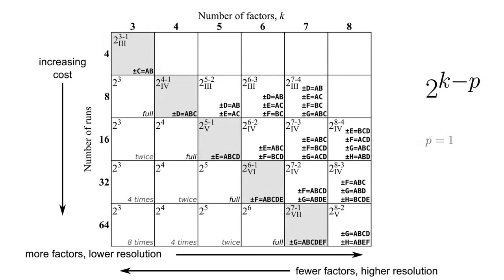If you're being observant, you will notice that p coincides with the number of generators. For half fractions, p is always equal to 1, because we halve the work. And half fractions always have one generator.